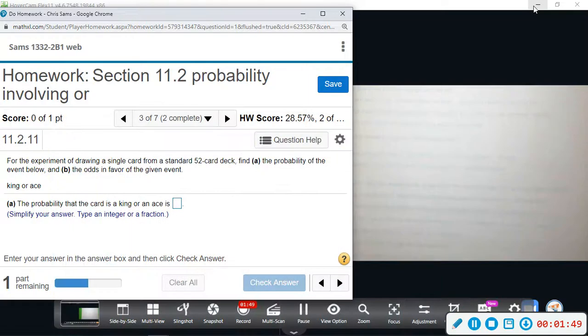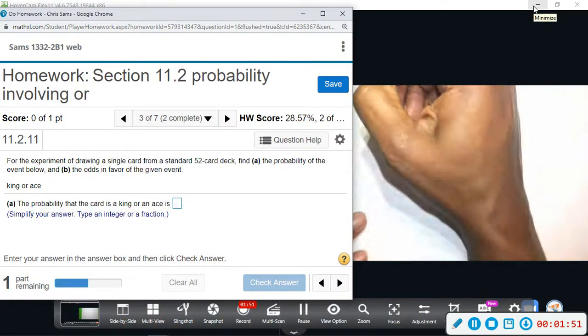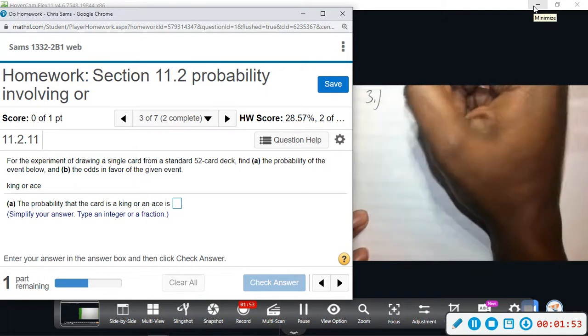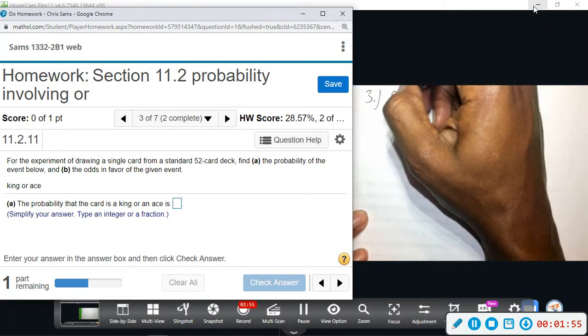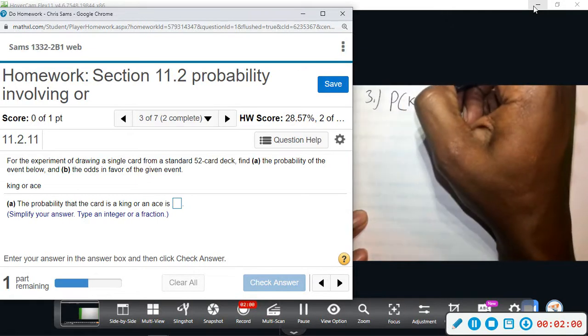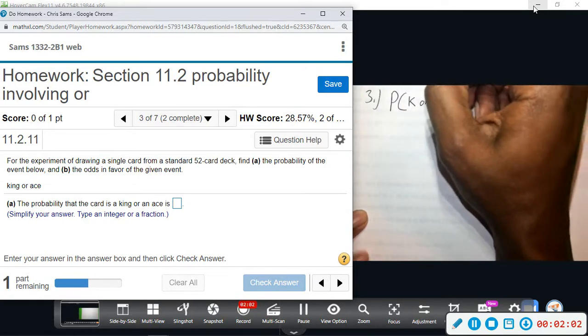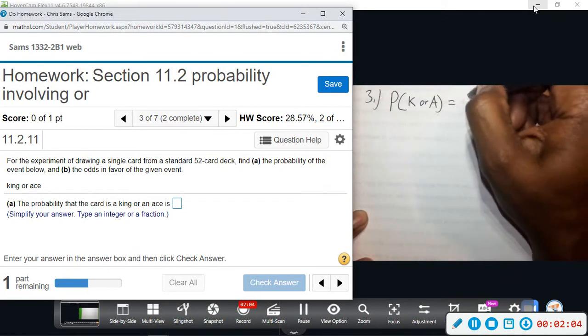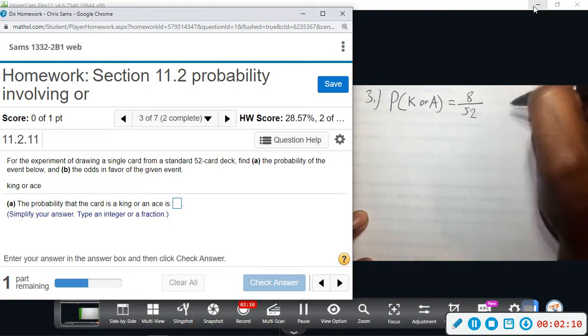Alright, so King or Ace. Generally it's written like this: P stands for probability, and then we will write King, so K, or A for Ace. Alright, there are eight Kings or Aces out of fifty-two. This reduces, if you divide both of these by four, to be two out of thirteen.